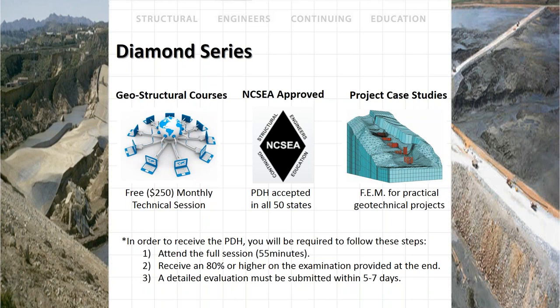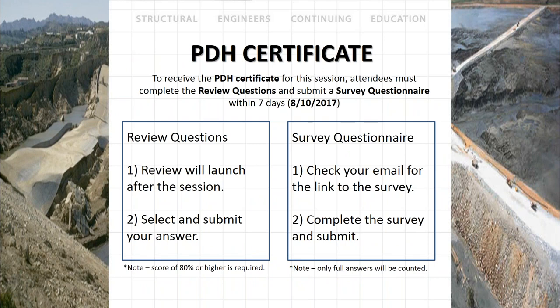To receive your PDH following this session, you will need a minimum of 55 minutes of attendance time and a short quiz at the end — 10 questions requiring 80% or higher to receive credit. You will receive the review questions by email near the end of the session. Submit them back and within seven days we will provide your certificates.